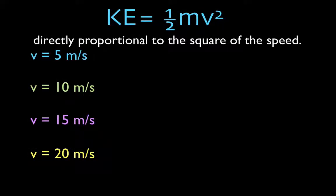Now, here we have our kinetic energy equation. Kinetic energy is equal to one-half the mass of the object times the velocity squared. Now, it's directly proportional to the mass, which means that the mass goes up, the kinetic energy goes up. If the mass goes down, the kinetic energy goes down.